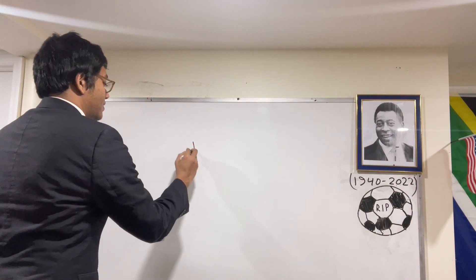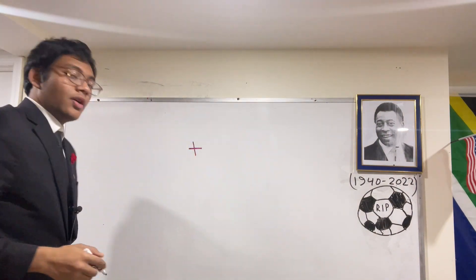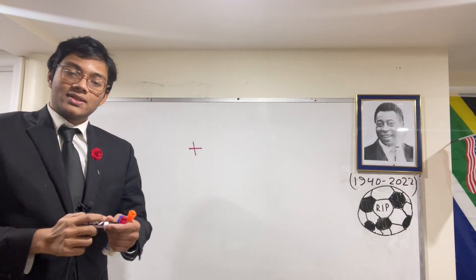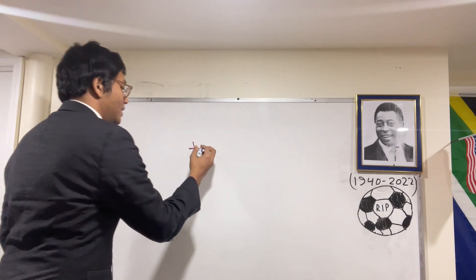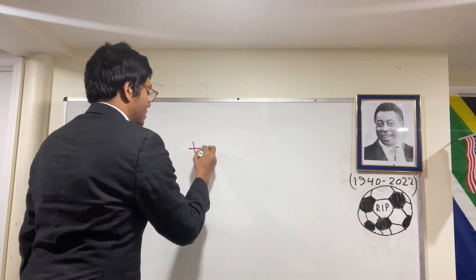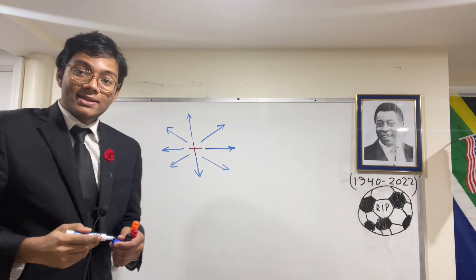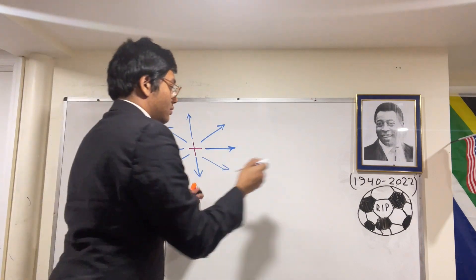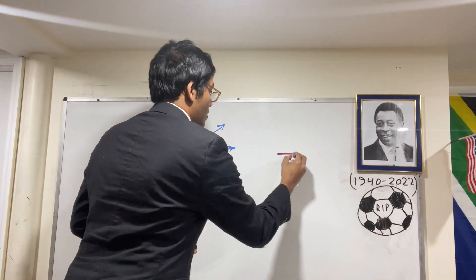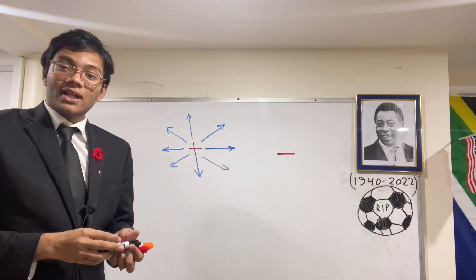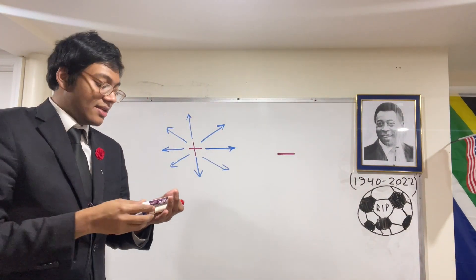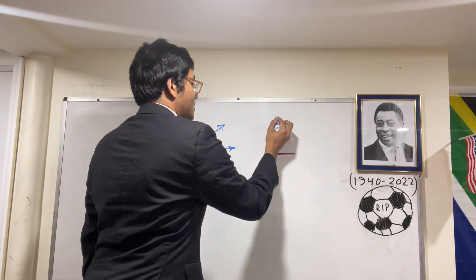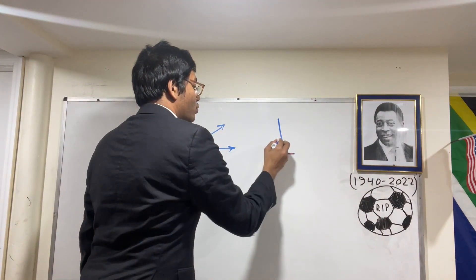Let's say you have a positive charge. What are the electric field lines for a positive charge? Well, they are radially outwards. Now let's say you have a negative charge. What are the electric field lines for a negative charge? Same idea, but now the electric field lines are radially inwards.